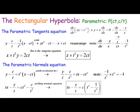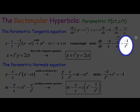The parametric point on xy equals c squared is (ct, c/t) — if you multiply those together the t's cancel and you get xy equals c squared. Substituting the parametric point, the parametric gradient is minus 1 over t squared.